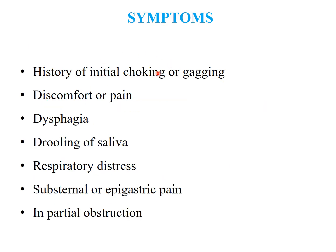Symptoms include a history of initial choking or gagging with excessive coughing. There may be discomfort or pain. The patient may have dysphagia, which may be either relative or absolute — especially in cases of food bolus, there will be absolute dysphagia. There will be dribbling of saliva out from the mouth. The patient may or may not have respiratory distress. There may be substernal or epigastric pain, or partial obstruction.